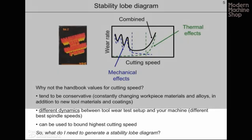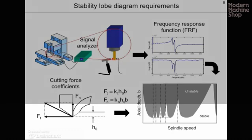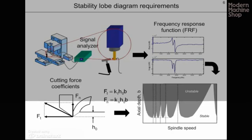The question we may ask is: what do I need in order to generate a stability lobe diagram? There are two requirements. The first is the frequency response function at the end of the cutting tool, which describes the dynamic response or vibration behavior of the tool, holder, spindle, and machine tool. The second is a model of the cutting force, generally described using cutting force coefficients, which relate the area of the chip being removed to the force components. Given these two items, a stability lobe diagram can then be generated.